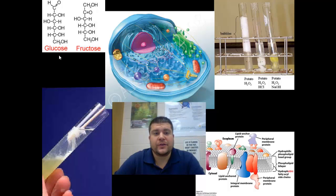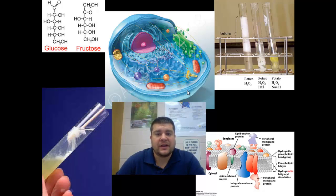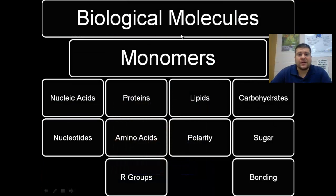We have glucose and fructose, which are carbohydrates — the building blocks of major carbohydrates like starch and glycogen. We have DNA, or nucleic acids. We also have proteins, which are used in this experiment as enzymes. And we have lipids, which make up our cell membranes for the outside of the cell, the nucleus, and all these other organelles. So biological molecules are the major components of life.